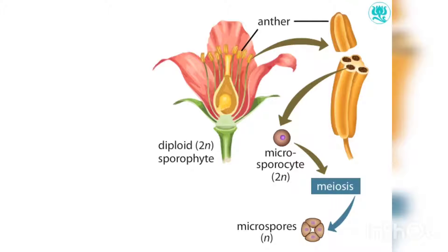Meanwhile, a similar process occurs within the flower's female parts, which consist of one or more carpels. In this example, the single carpel consists of a stigma, style, ovary, and ovule.